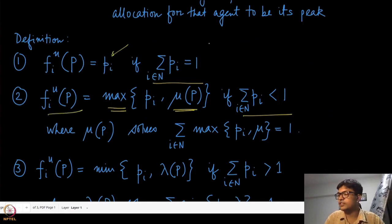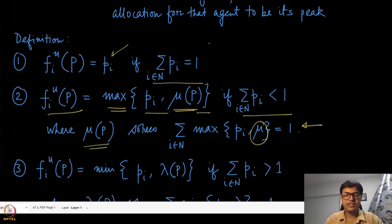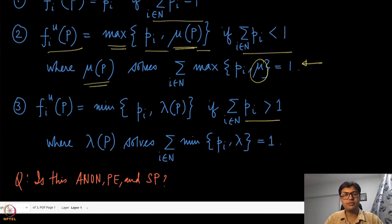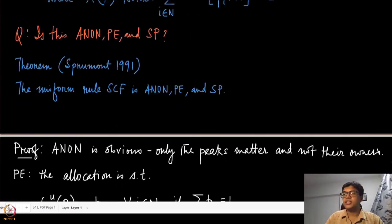The uniform allocation rule gives the maximum of two quantities: the player's peak p_i and mu(p), where mu(p) is determined by solving for the value such that the sum of max(p_i, mu) equals one. This is the formal way of writing it; the easier way is to visualize using the figure. Similarly, for the alternative case where the sum of peaks is more than one, the allocation is the minimum of the peak and the water level where it finally settled.